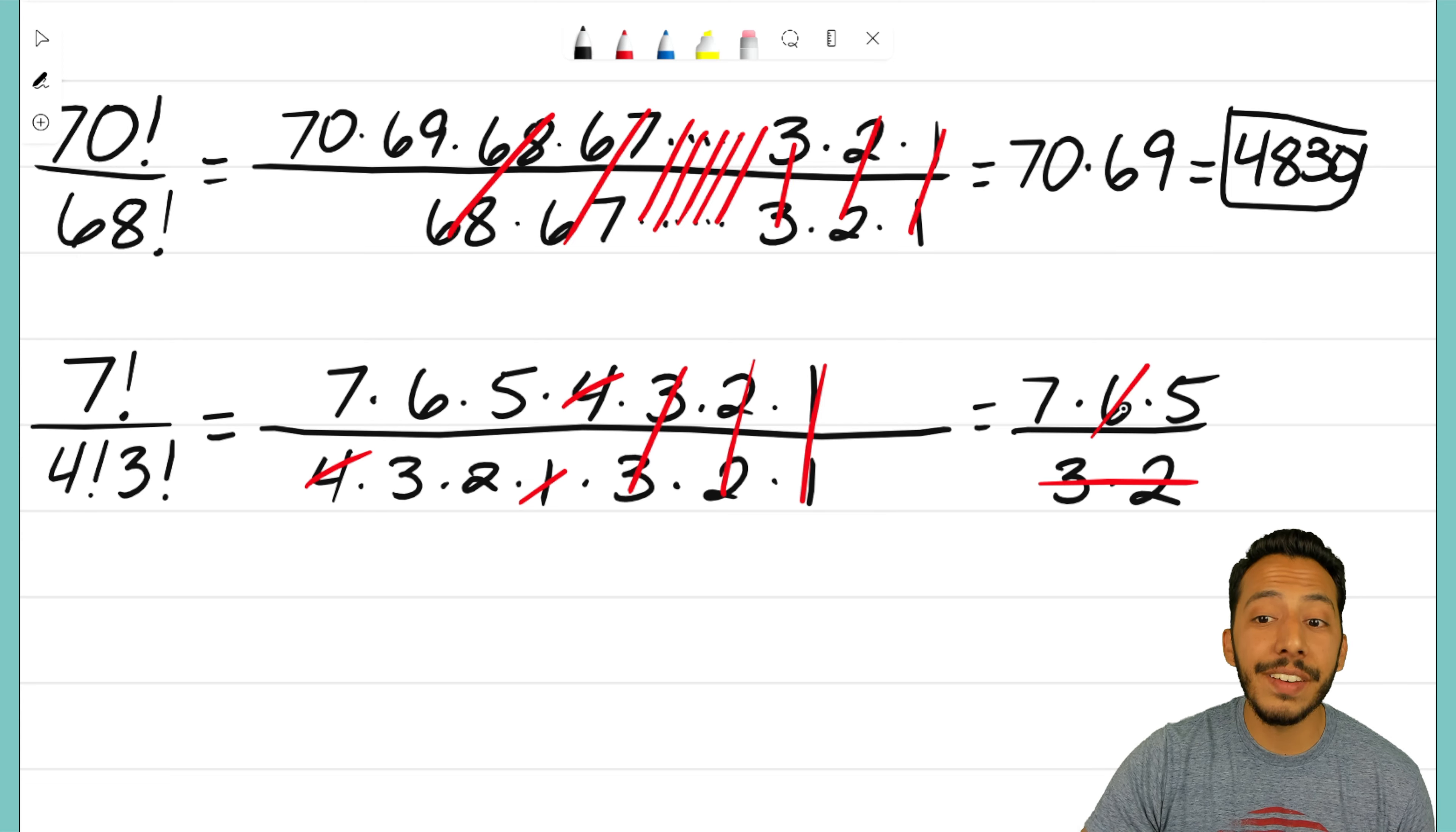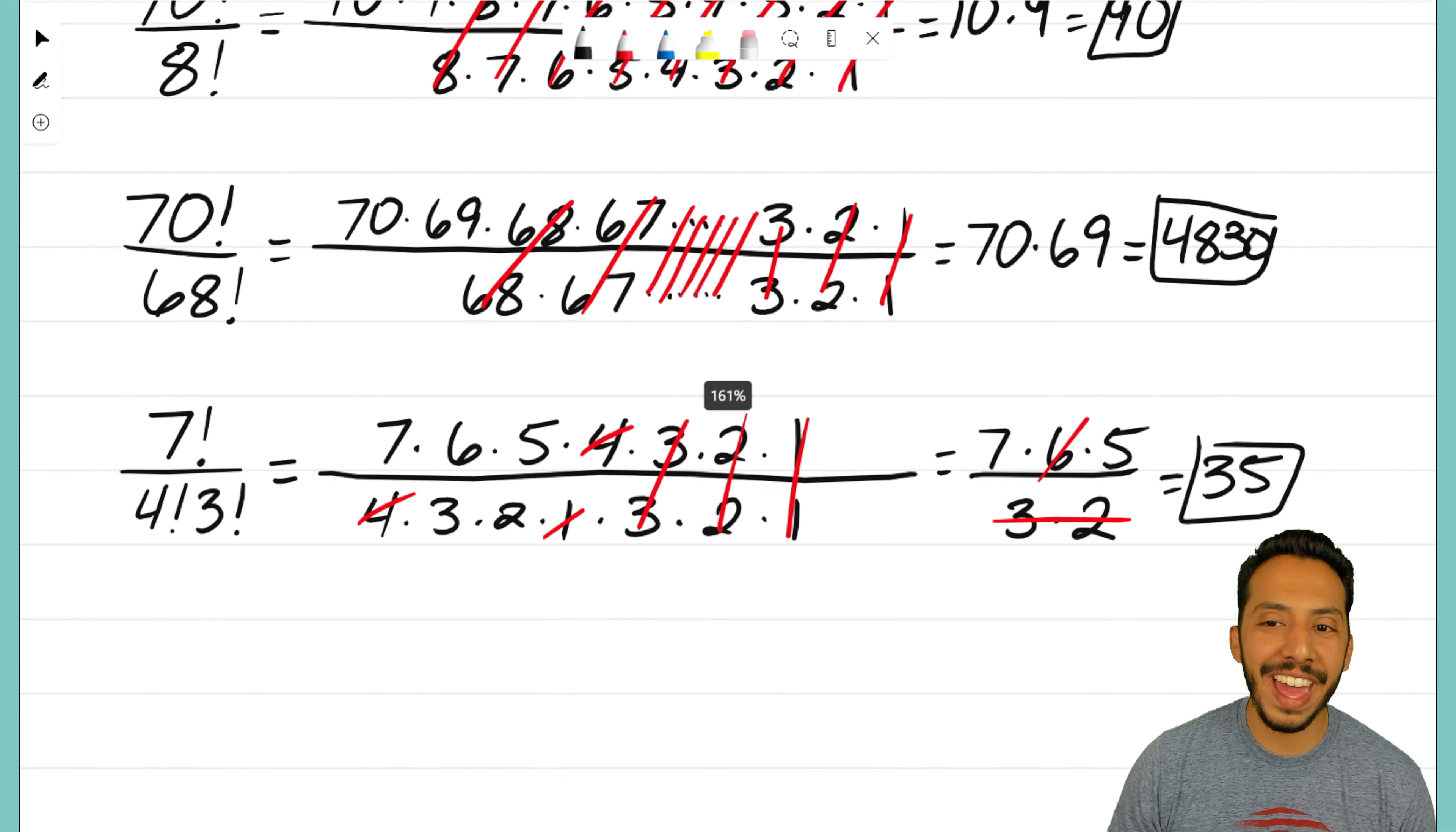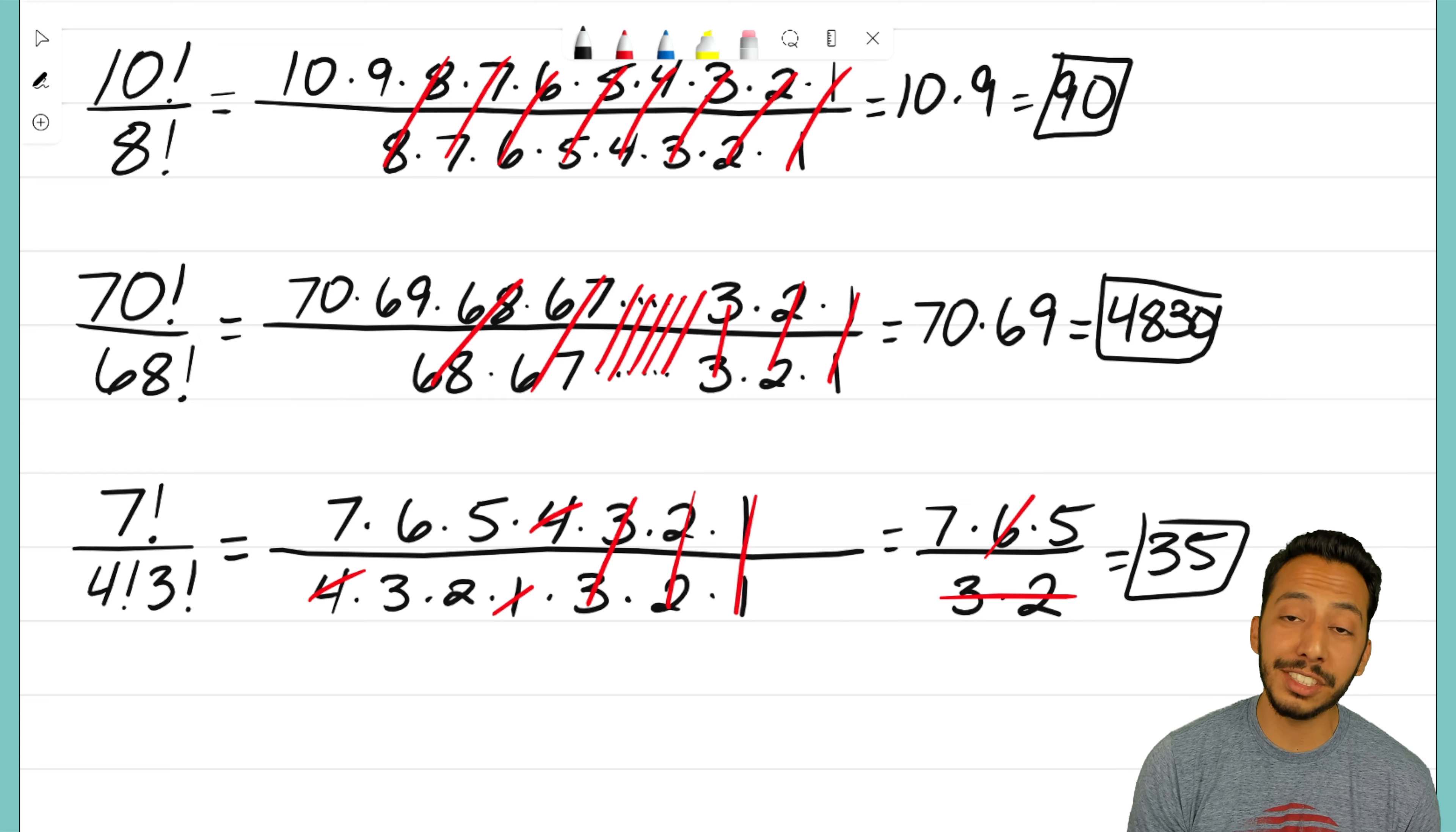I'm really just left with 7 times 5, which ends up being 35. Look at that—this was probably the more complicated looking of our three examples and ended up with the smallest number as its answer, just because of the way the stuff cancels out.